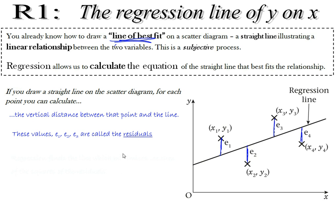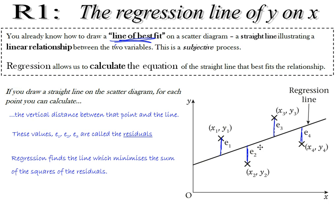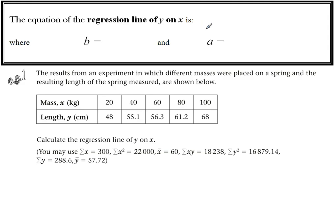Regression is the process which takes these residuals and minimizes the sum of the squares — square them, add them all up, and whichever line gives you the smallest total, that is your regression line. It effectively means the line where, on average, the points are closest to the line. This is what you need to put in your notes.